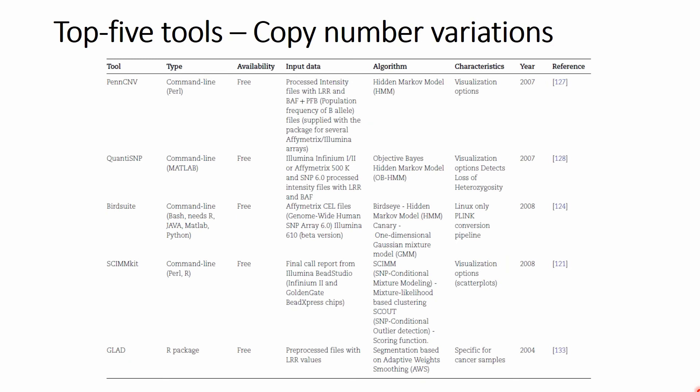Next up are the top five tools for copy number variation analysis. The top of the list is the well-known PanCNV software, followed by Quanti, SNP, BirdSuite, S-SimKit, and GLAD. Different types of software are represented — mostly command line, with an R package in fifth place — and they are all free. There is great variability in input data and algorithms, though notably the top three all use a variation of the hidden Markov model.